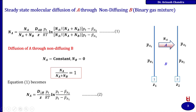Where Dab is the diffusivity, Z is the distance between interfaces 1 and 2, Pt is the total pressure, R is the gas constant, T is the temperature, Pa2 is the partial pressure of A at position 2, and Pa1 is the partial pressure of A at position 1.